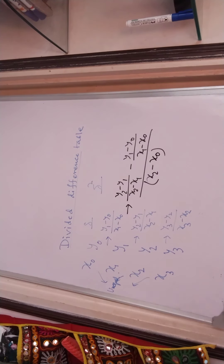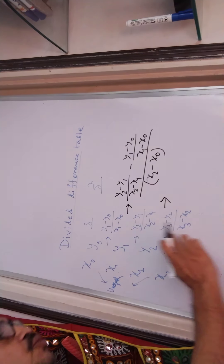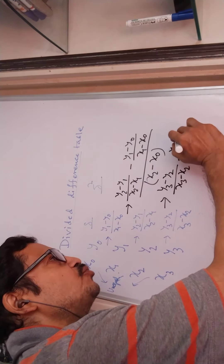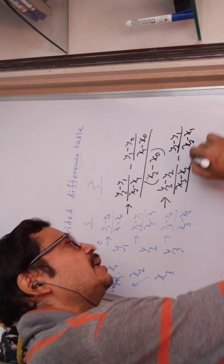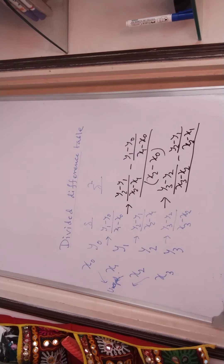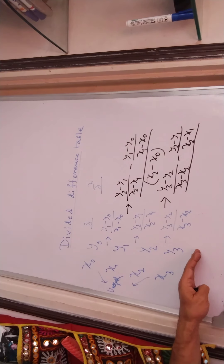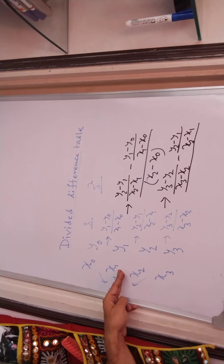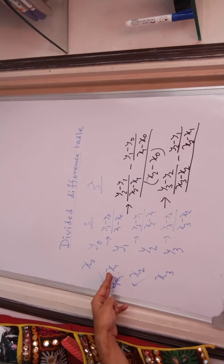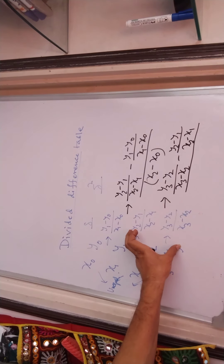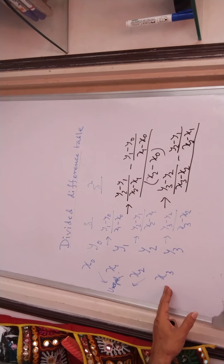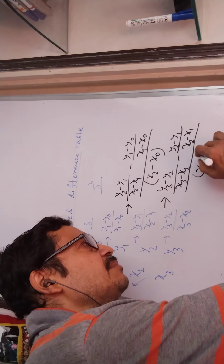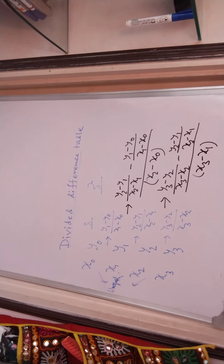Similarly, when we take the difference of the first differences between nodes y3, y2 and y2, y1 — that is, y3 minus y2 by x3 minus x2, minus y2 minus y1 by x2 minus x1 — we divide by x3 minus x1, since the extreme nodal points are x3 downstream and x1 upstream.